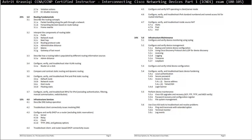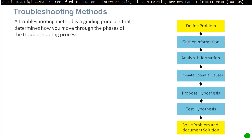A troubleshooting method is a guiding principle that determines how you move through the phases of the troubleshooting process. First we define a problem, then gather information, then analyze that information. After that we eliminate potential causes, propose a hypothesis, test our hypothesis, and finally solve the problem and document the solution.